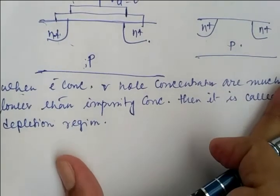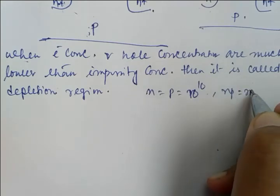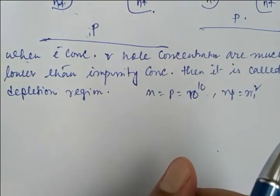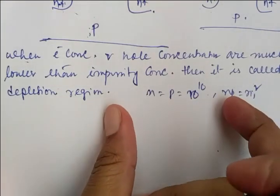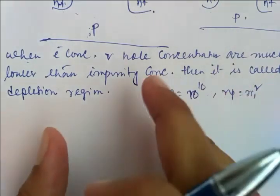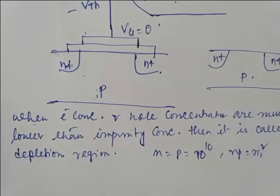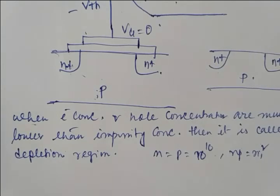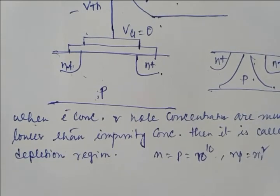We know that n = p = ni = 10^10, and np = ni squared, so n and p are much smaller than the doping concentration of 10^15 — that is the depletion region. Whenever the transistor length is very large, the depletion region is small relative to the channel, so a large volume is depleted and inverted. But whenever we scale the transistor, there will be a significant fraction of change in the channel length.